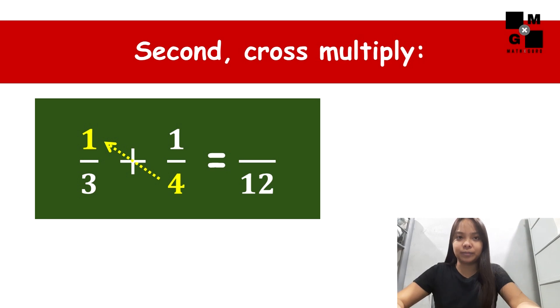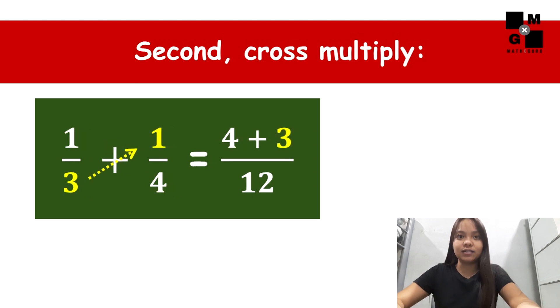The second step is to cross-multiply. Cross-multiply the numbers as shown in the slide. Four times one is four. Then cross-multiply again. Three times one is three.